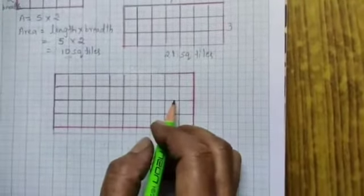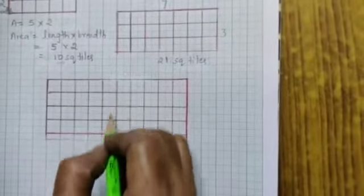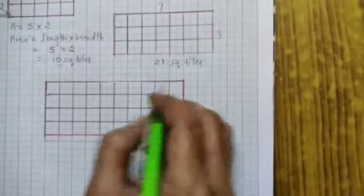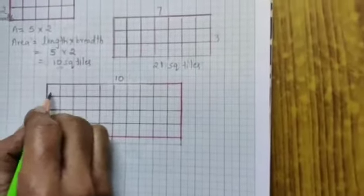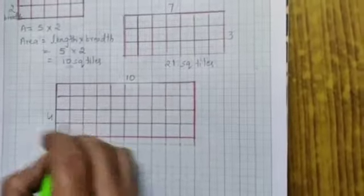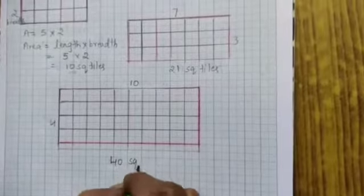This is another room. Here there are 10 columns and 4 rows. So 10 fours are 40 — 40 square tiles.